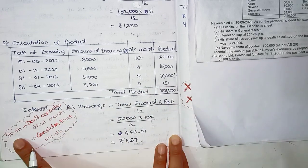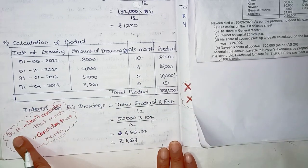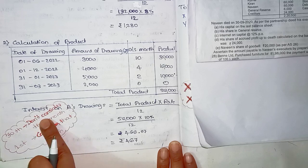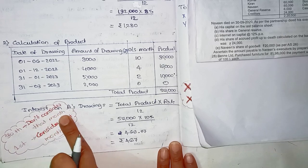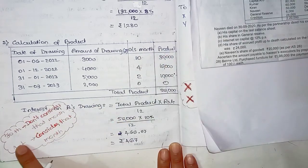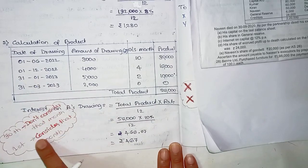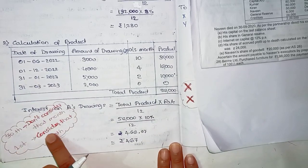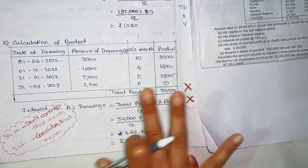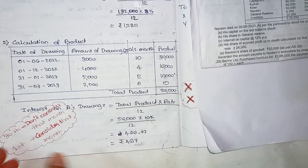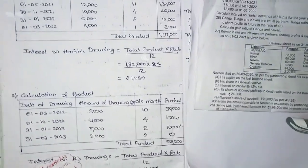One important revision point: for a 30th month-end date, don't consider that month. For a 1st beginning date, do consider that month for the calculation. So you can use the product method with this approach.